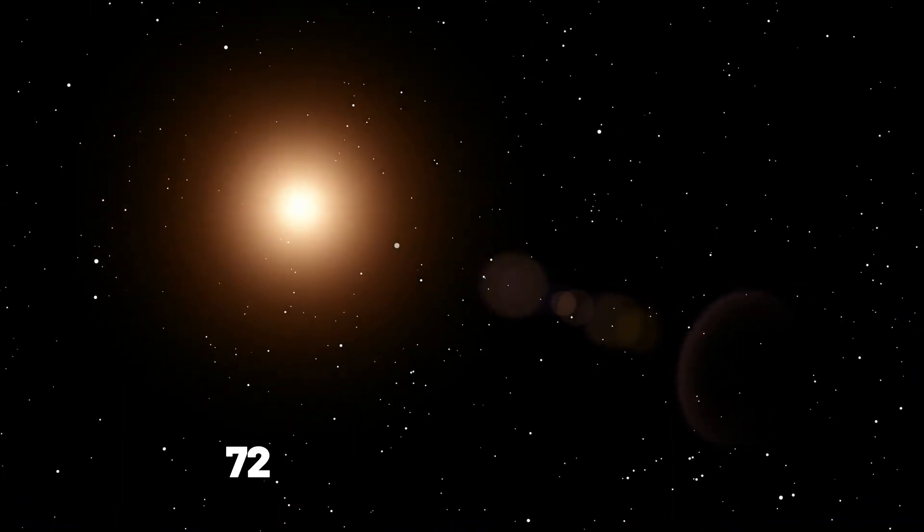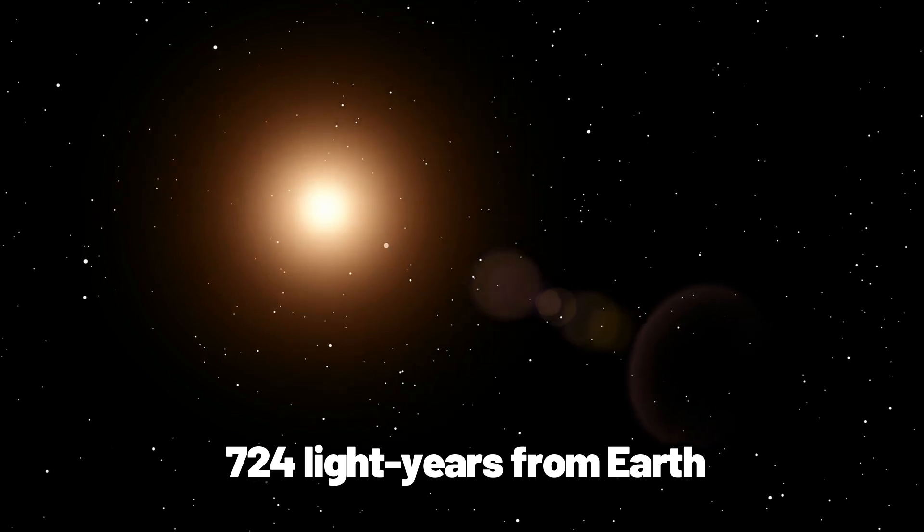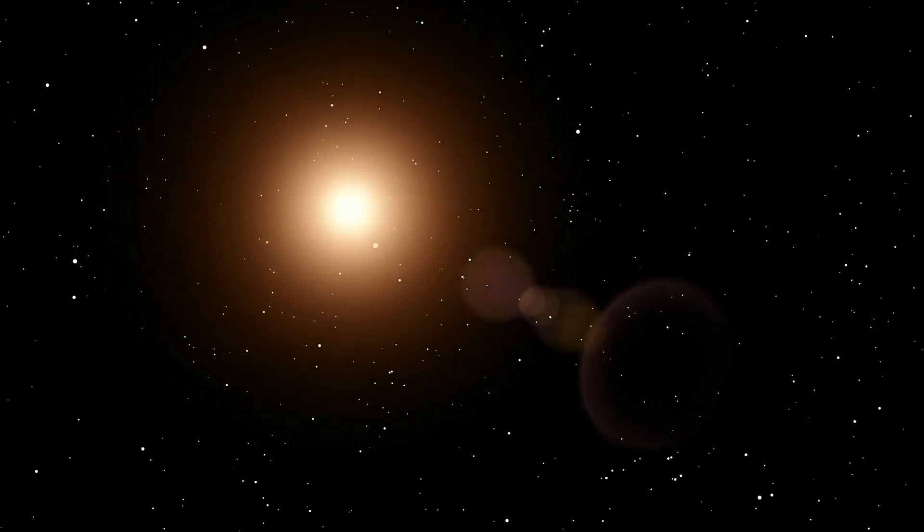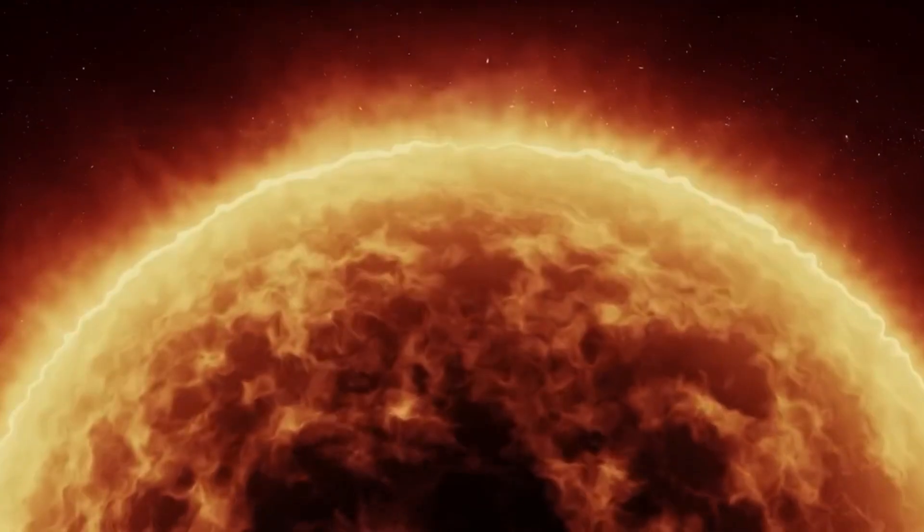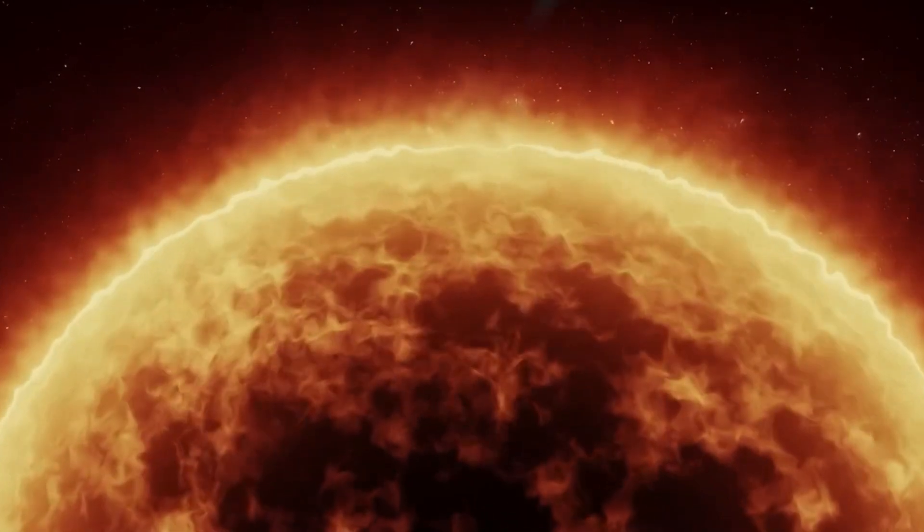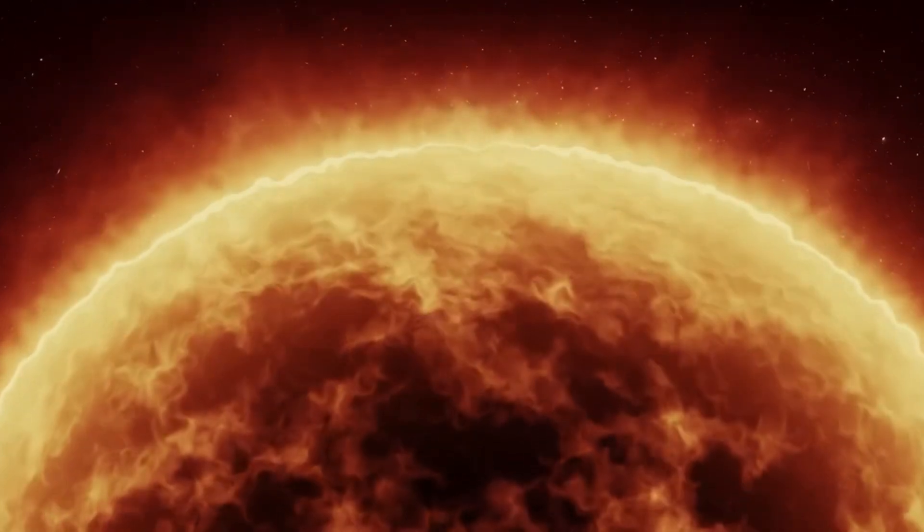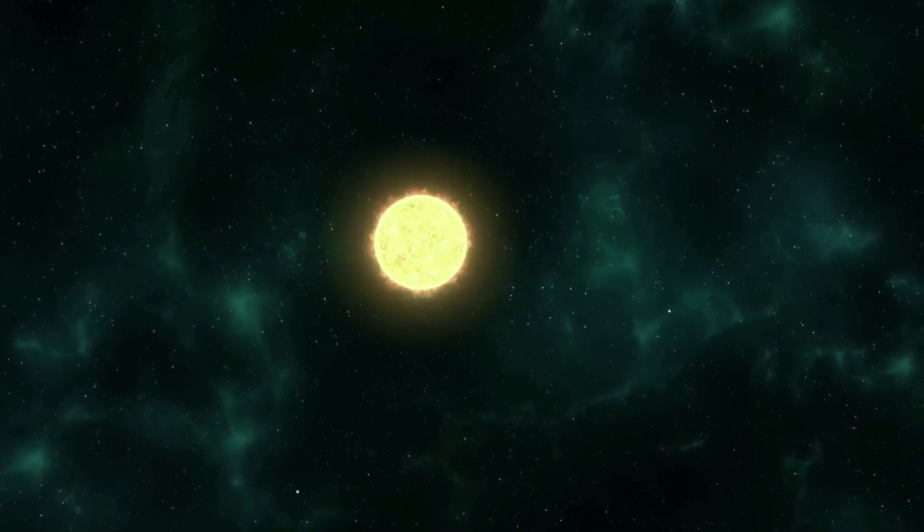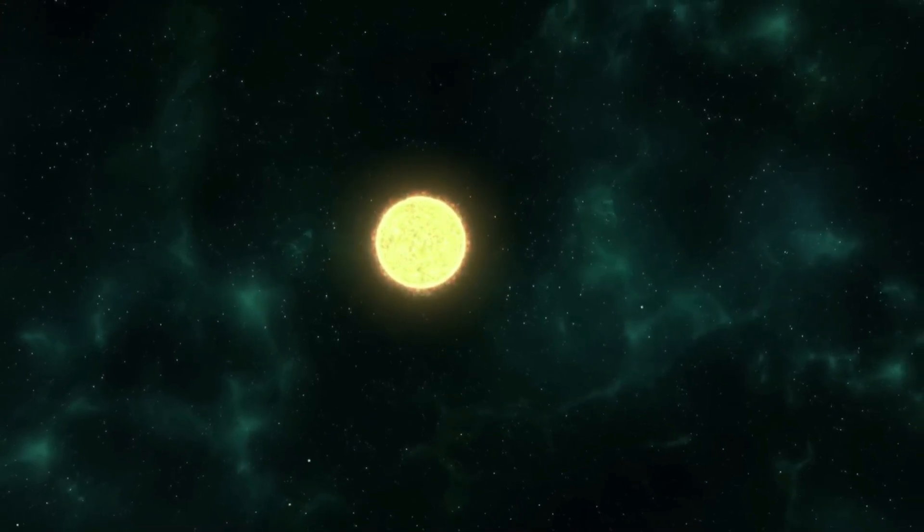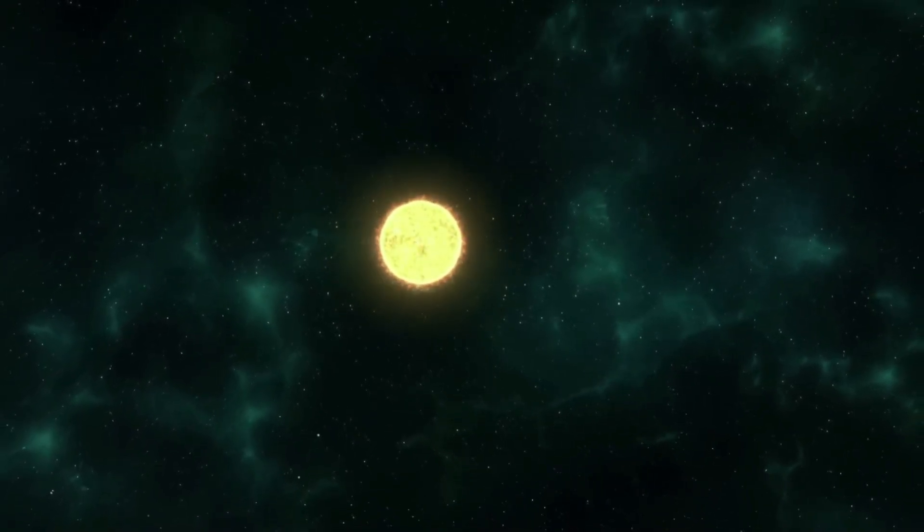Betelgeuse could be as close as 724 light-years from Earth. However, other calculations put it farther away. Betelgeuse and other red supergiant stars are notoriously difficult to pin down in terms of distance.